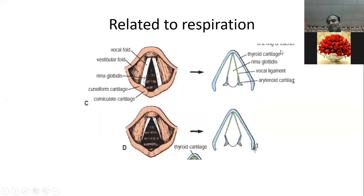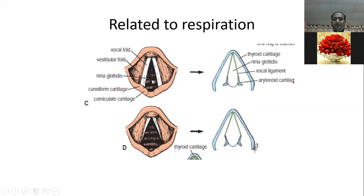This is related to respiration. The center of the larynx continues into the trachea — this is the rima glottidis. On the sides are the vocal folds, which are mobile, white in color, involved in voice production, and avascular. Laterally and above are the vestibular folds, which are fixed and pink in color.